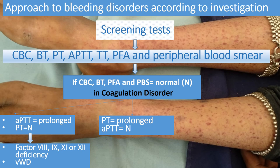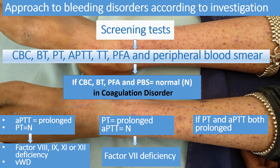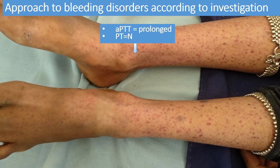If PT is prolonged while APTT is normal, that means an extrinsic pathway defect is present — so factor 7 deficiency should be investigated with a factor 7 assay. If both PT and APTT are prolonged, common pathway factors may be deficient, so factor 1, 2, 5, or 10 deficiency should be ruled out.